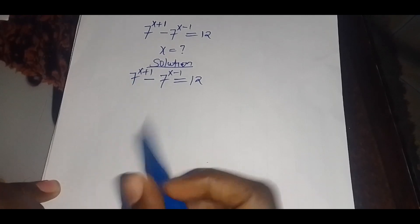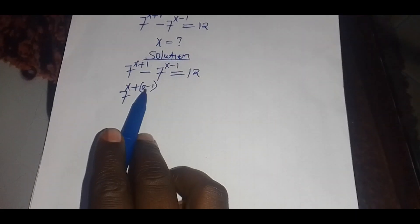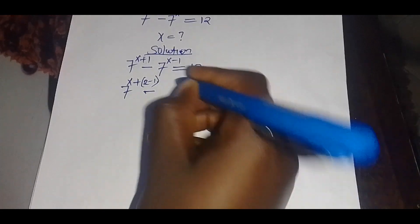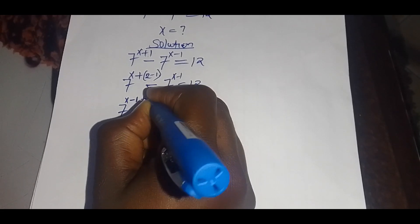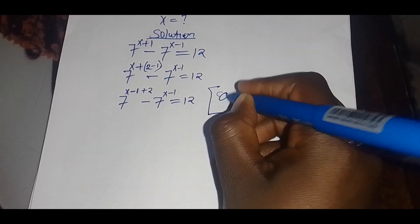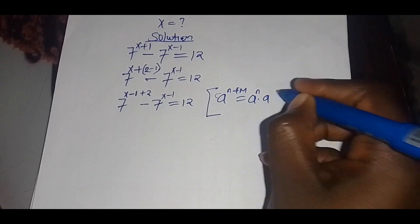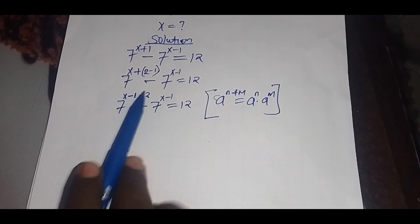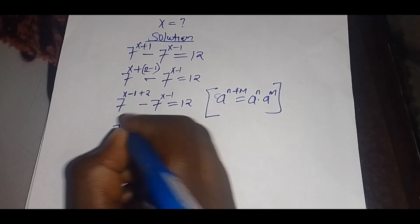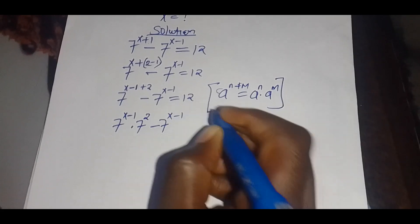We can rewrite 7 raised to power x plus one by expressing the exponent as (x minus one) plus two, since two minus one equals one. So we have 7 raised to power (x minus one) plus two, minus 7 raised to power x minus one, equals 12. Now we apply the identity that a raised to power n plus m equals a raised to power n, multiplied by a raised to power m. Applying this, we get 7 raised to power (x minus one), multiplied by 7 squared, minus 7 raised to power (x minus one), equals 12.